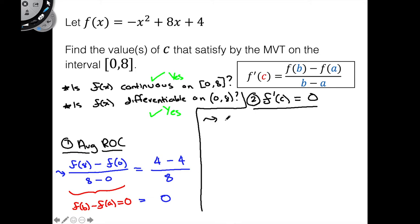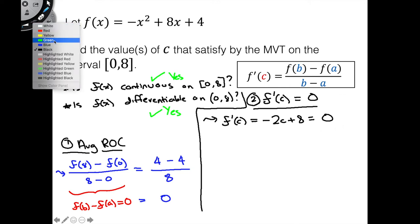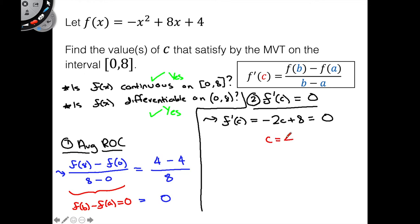So we'll have f prime of c equals negative 2c plus 8, and that guy is going to be equal to 0. We can push over the 2c to that side, divide by 2, and we'll just be left with c equals 4.